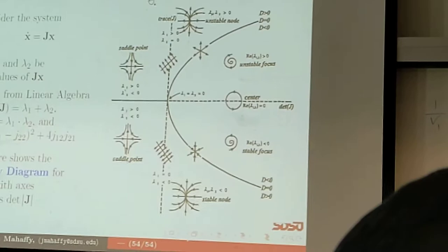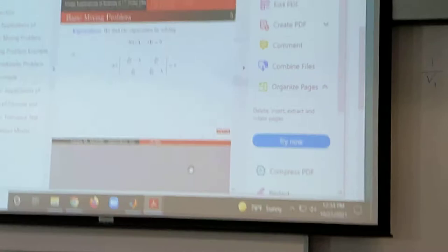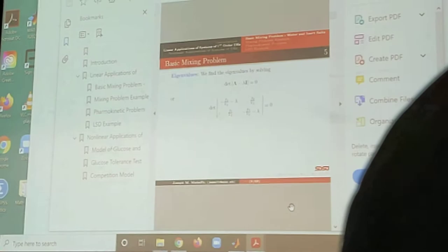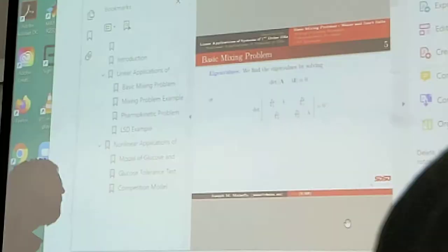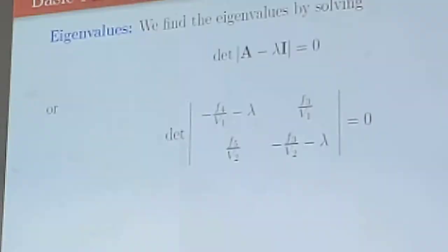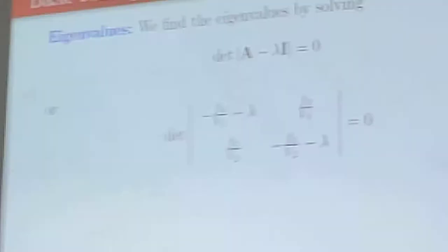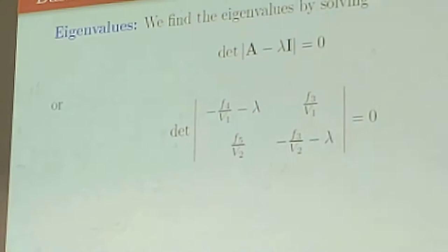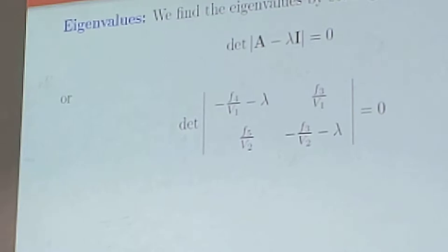So, we get these, we can get this equilibrium. The next thing we want to do is we want to find the eigenvalues. So, we're going to find the A minus lambda I, determinant of that, equals zero. It's the characteristic equation. So, we get our matrix there. We look at the particular flows. Again, we can see that minus F4 over V1 right here. And, we can see over there, we can see F3 over V1.